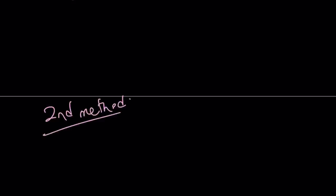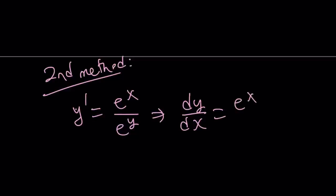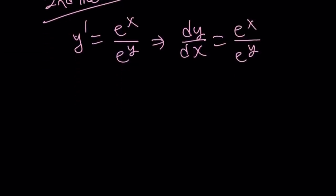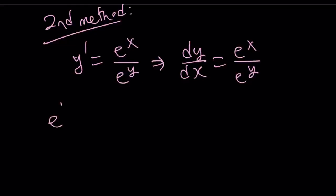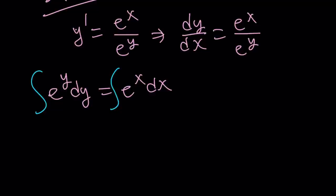Now our second method is basically easier. We're going to write the right hand side as e to the power x over e to the power y, and write y prime as dy over dx. This is a separable equation again but much more straightforward. Putting the y's together: e to the power y dy equals e to the power x dx. We integrate both sides: the left gives e to the power y, and the right gives e to the power x. Let's add a constant k.